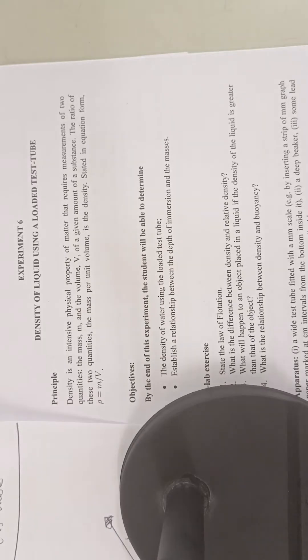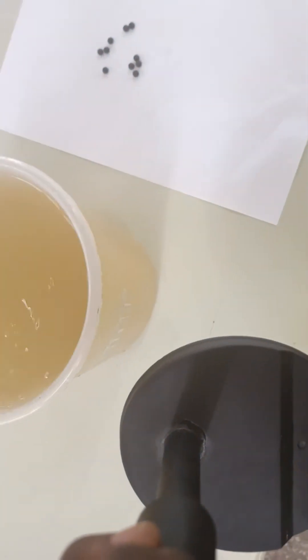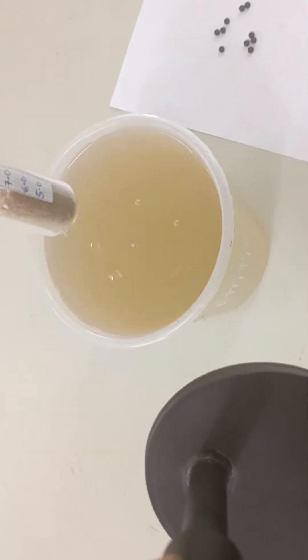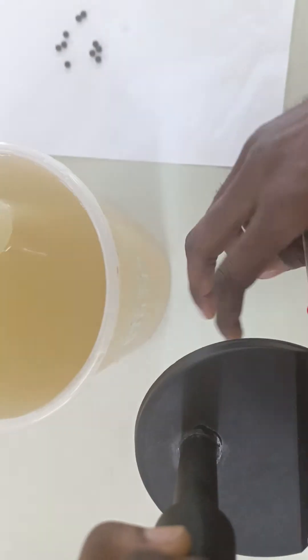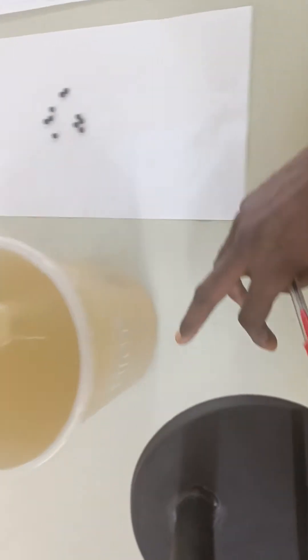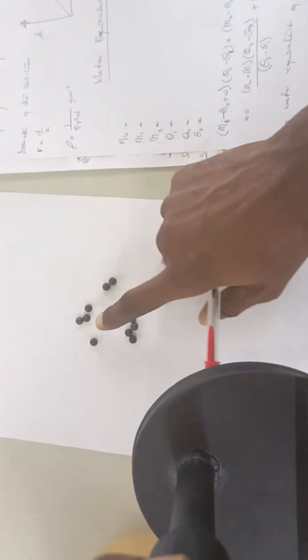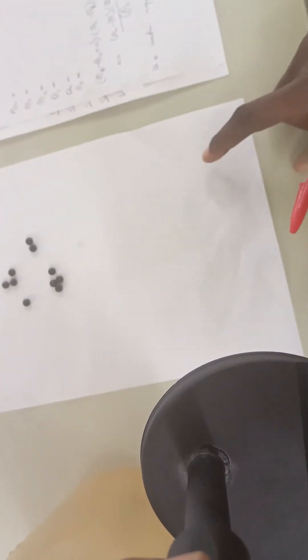First of all, we have our test tube, then we have this water, and then also the mass. So these are the only things we need to find the density of this particular liquid.